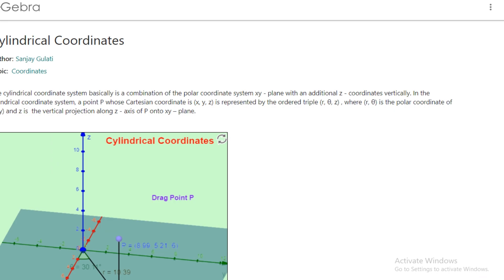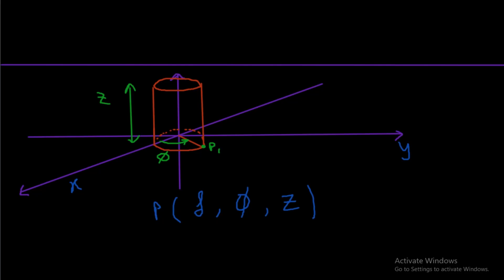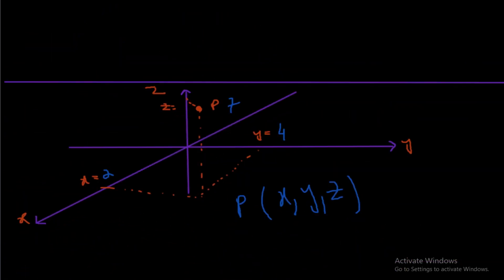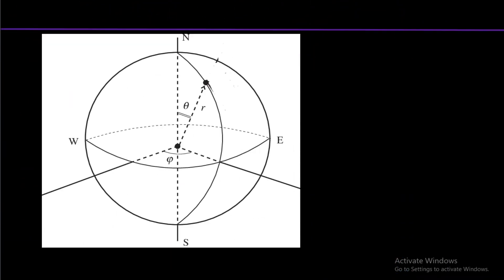Let's move to the next coordinate system — the spherical coordinate system. In this system, we again need three parameters to move in the space. Let us define the point P, which requires three parameters. The first parameter will be the radius of the sphere, and the second parameter will be phi, which sweeps the x-y axis.